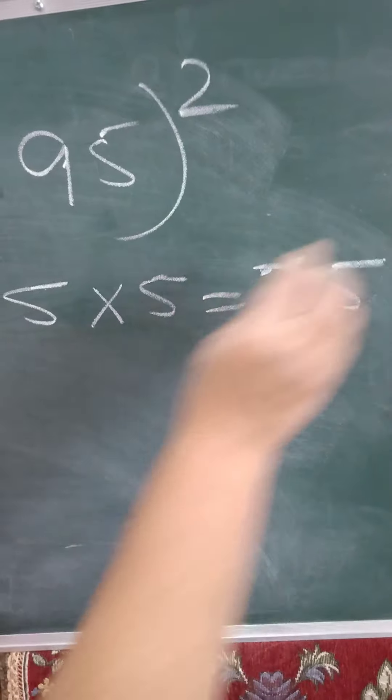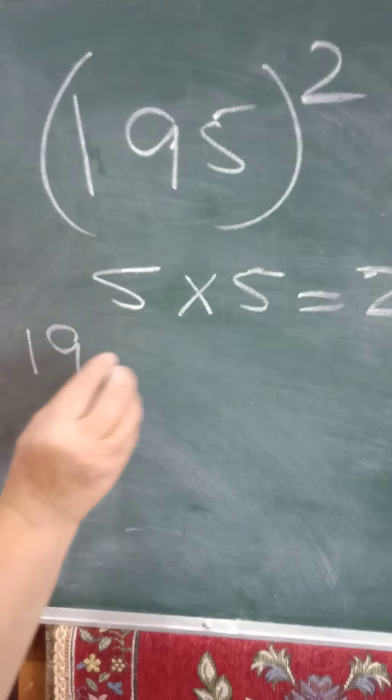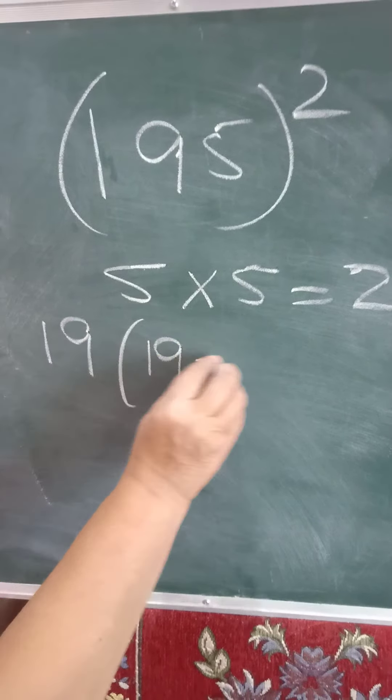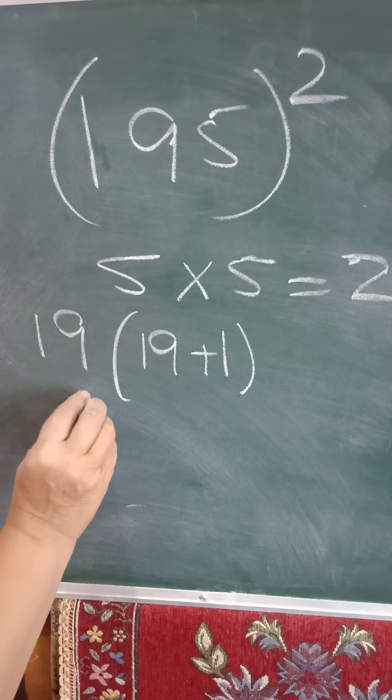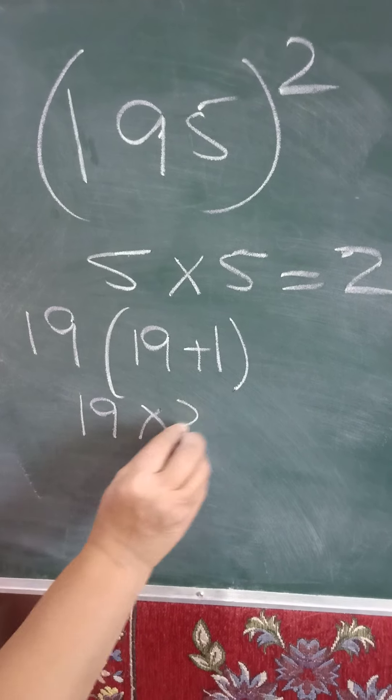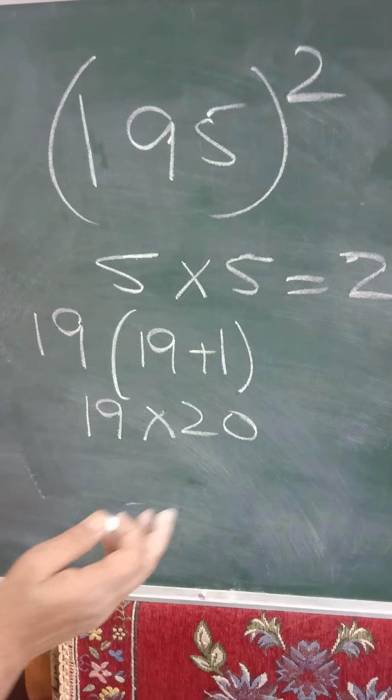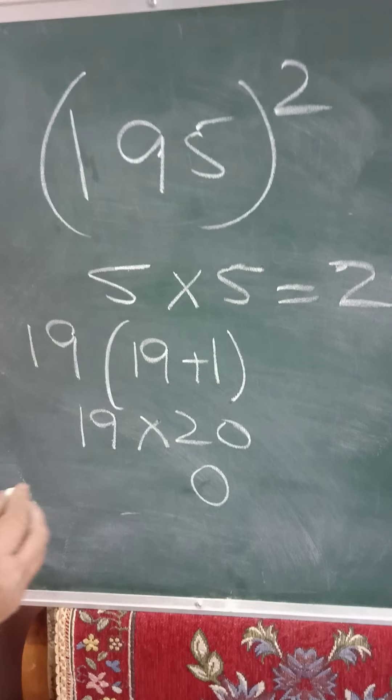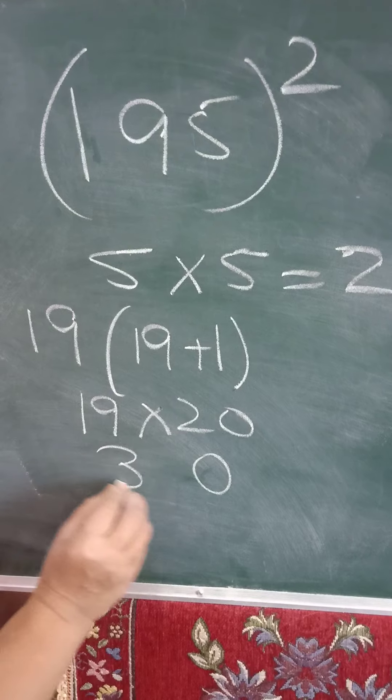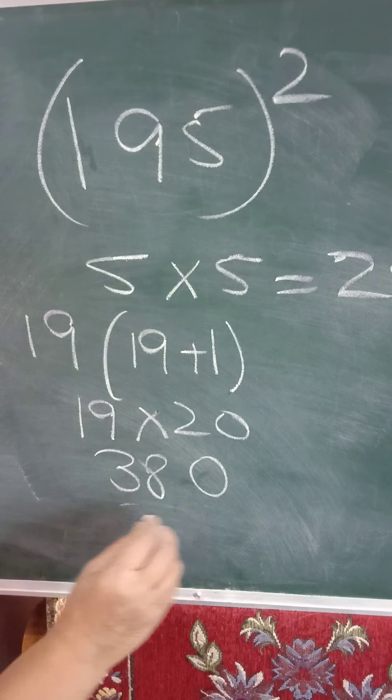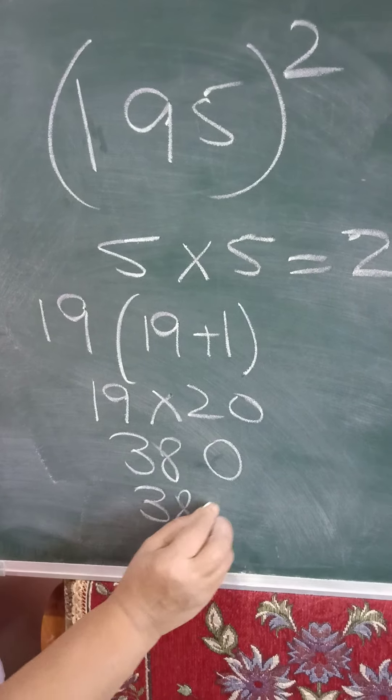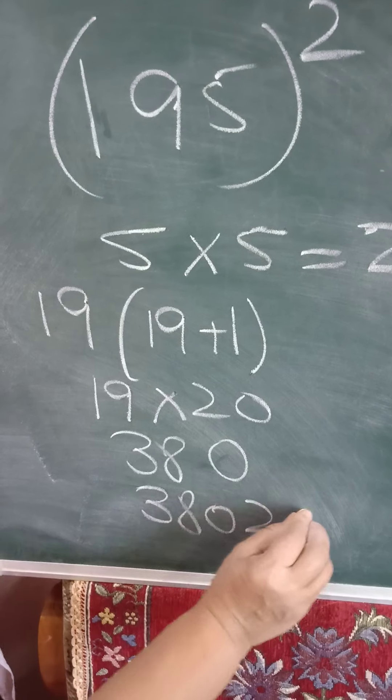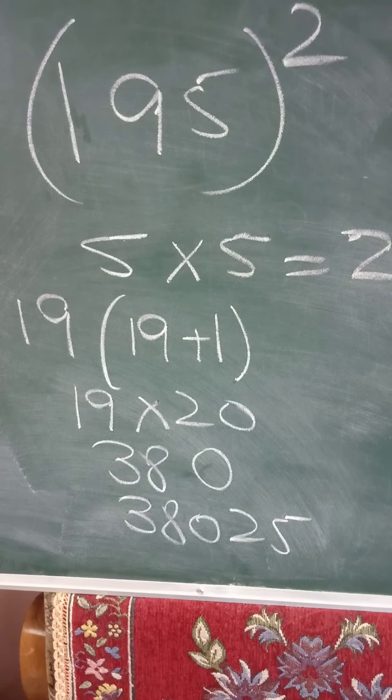Again, 5, 5 is 25. Then 19 multiplied by 19 plus 1. 19 plus 1 means 19 into 20. Here see. 0 you know. You have to put at the end. 19 table you know. 19 twos are 38. So 3, 8, 0, 2, 5.